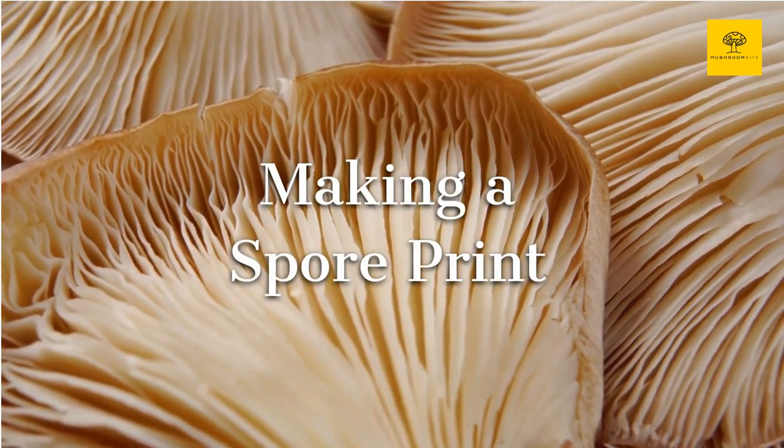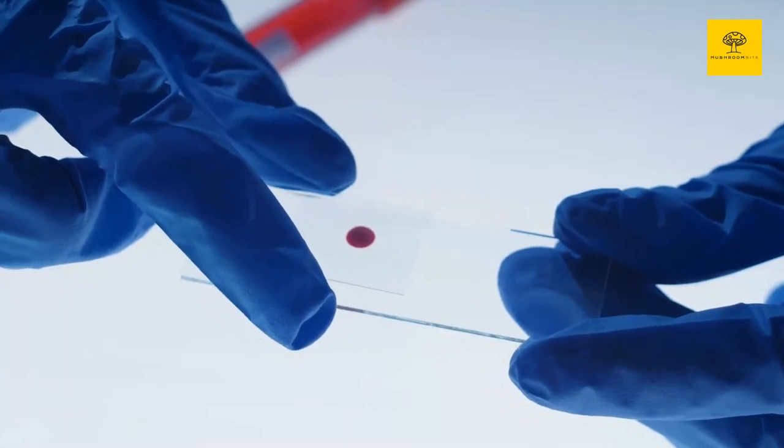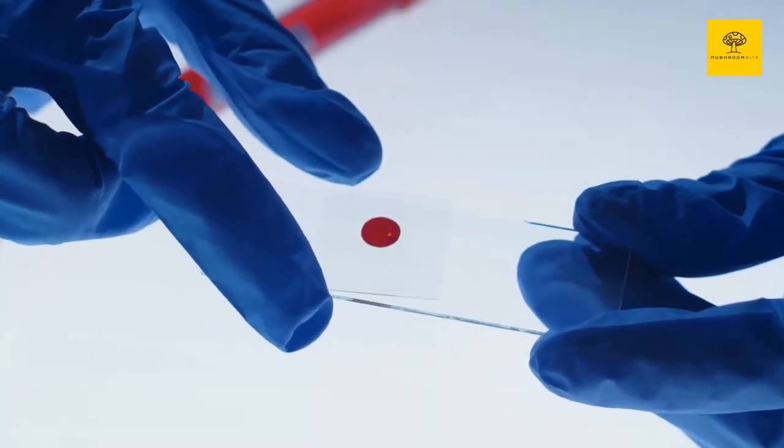Making a spore print. Once you've gotten your mushroom home, all you need is a little bit of patience, some white or colored paper depending on the natural color of the spore, aluminum foil, or a glass slide if you're feeling fancy or you wish to look at a spore under a microscope.